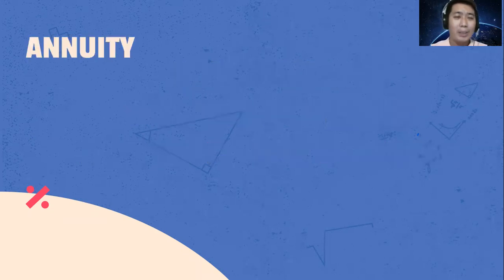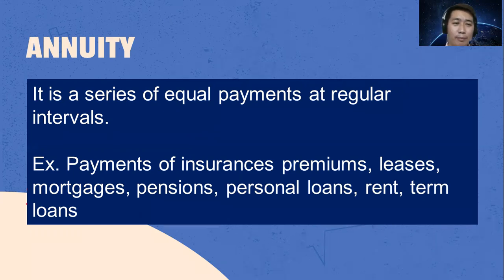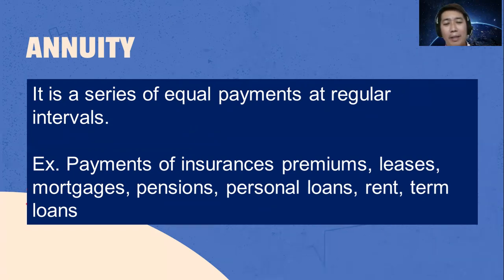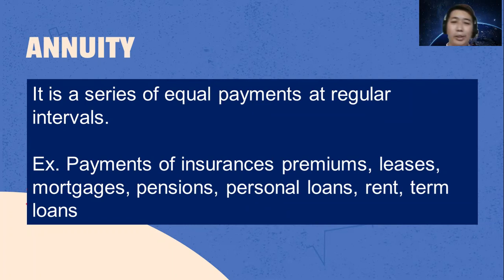What is annuity? It is a series of equal payments at regular intervals. Examples of the application of annuity: payment of insurance premiums, leases, mortgages, pensions, personal loans, rent, and term loans.